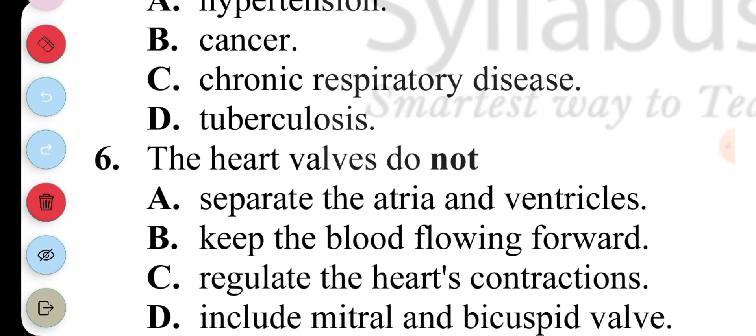Question 6: The heart valves do not A. Separate the atrium and ventricles, B. Keep the blood flowing forward, C. Regulate the heart's contraction, D. Include mitral and bicuspid valve. The answer to question 6 is C.